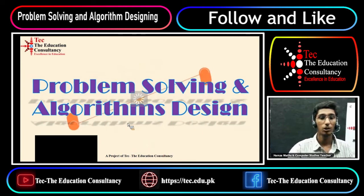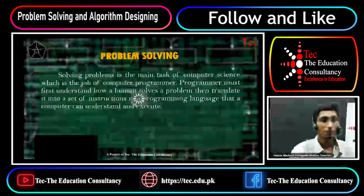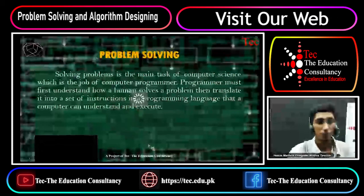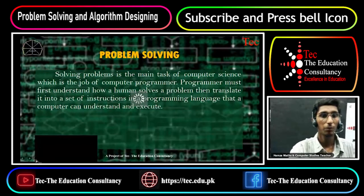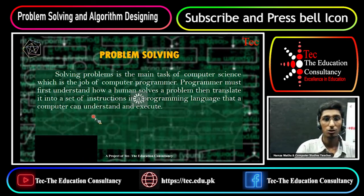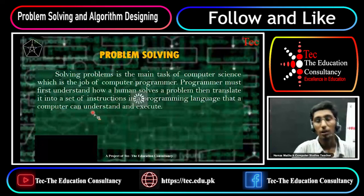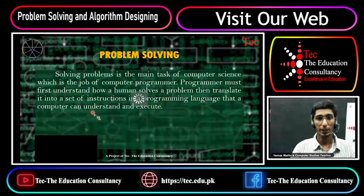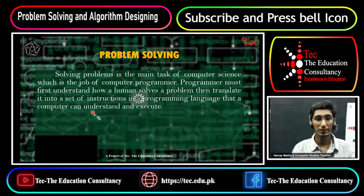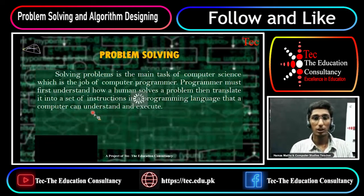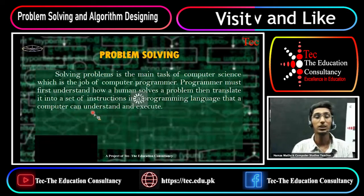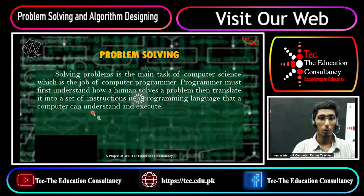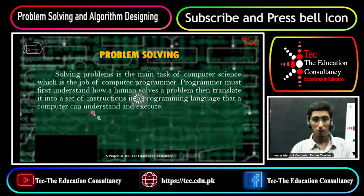Problem Solving is the main task of Computer Science, which is the job of Computer Programming. You need to know about problem solving. A computer is not intelligent on its own — it cannot solve any problem by itself. So, how do you make it work? This is the main task of Computer Science — you work for it as a human.